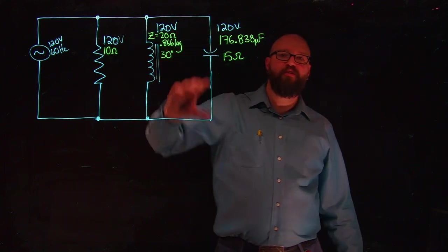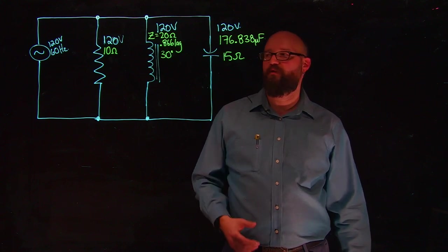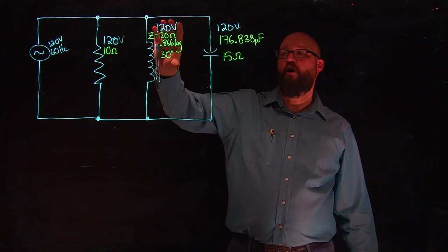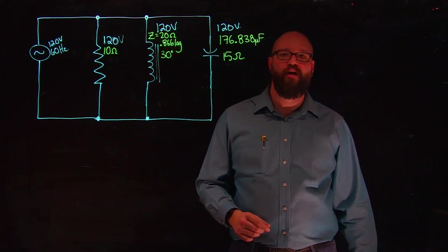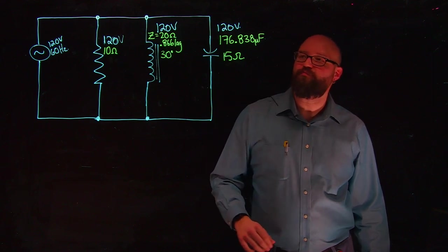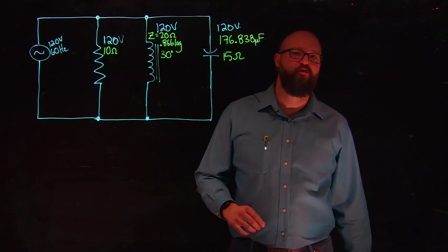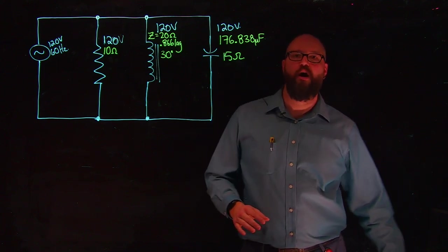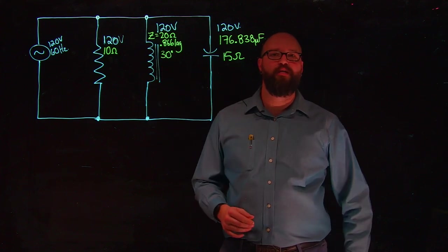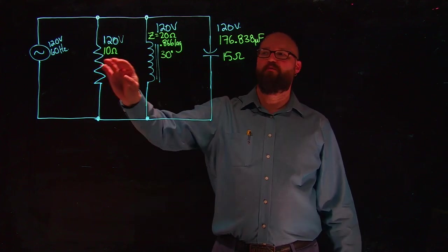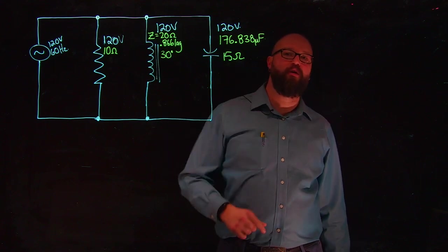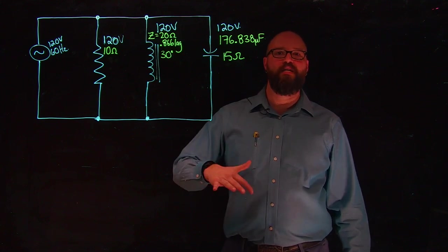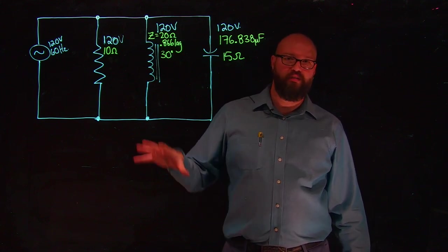What I've done from the previous video is I've left all the information that we were given. We had 10 ohms of impedance, 20 ohms of impedance on our coil at a 0.866 lagging power factor or 30 degree phase angle. And we had our 176.838 microfarads, which we converted to 15 ohms of capacitive reactance. When I say we have the impedance of each branch, what we need to remember is that in a purely resistive branch, my resistance will be equal to my impedance. And in a purely capacitive branch, my capacitive reactance will be equal to my impedance, which we need to use those totals in the next steps that we're going to do.